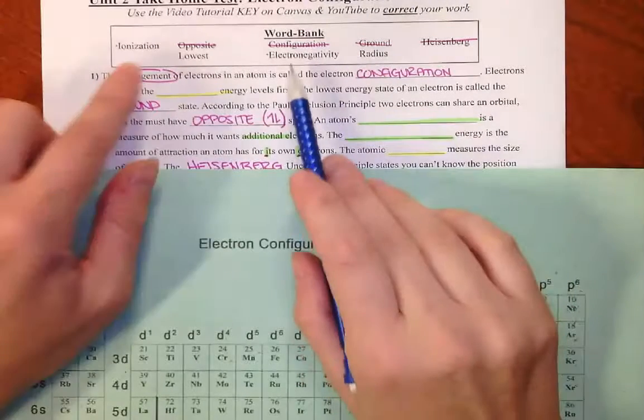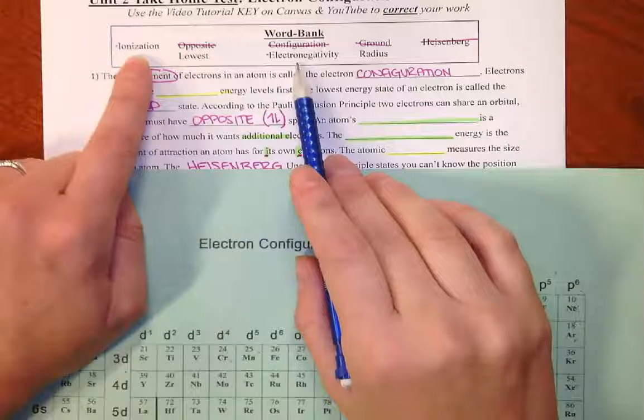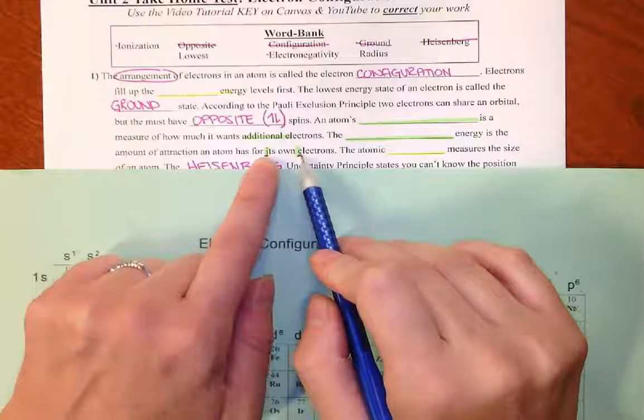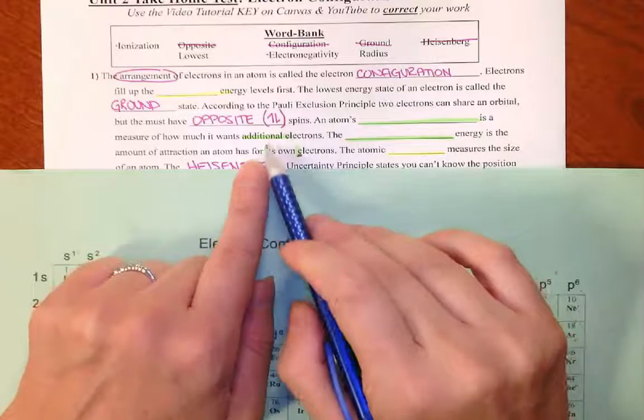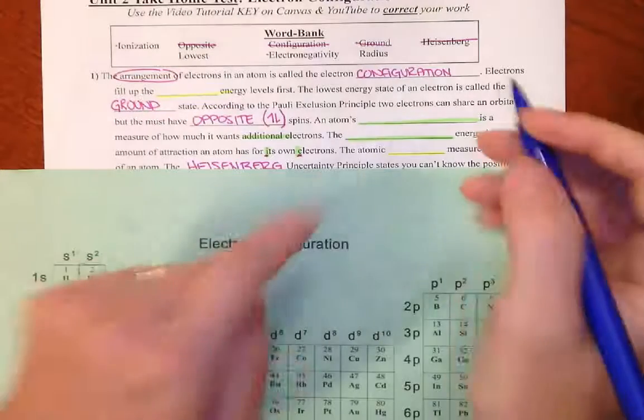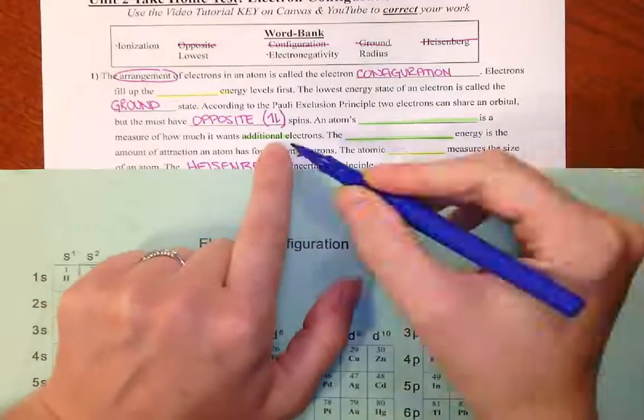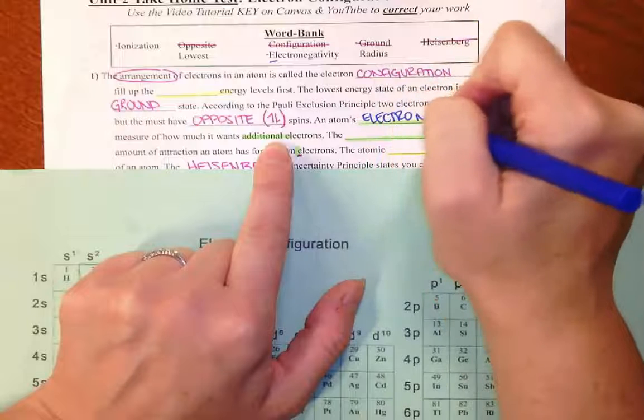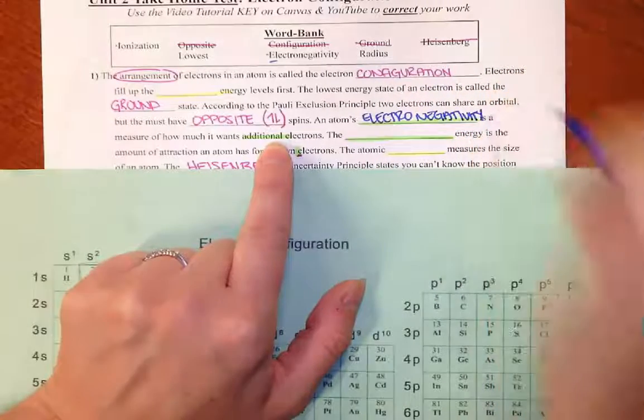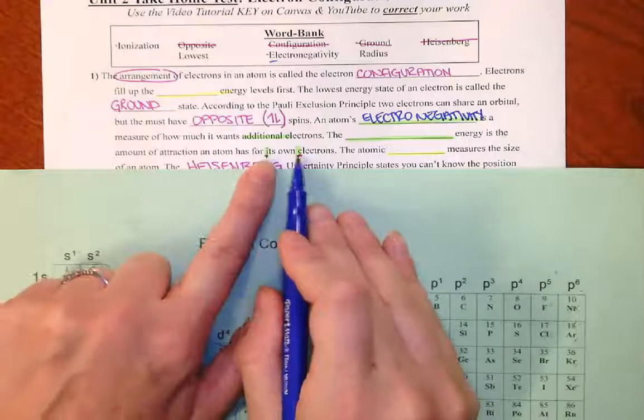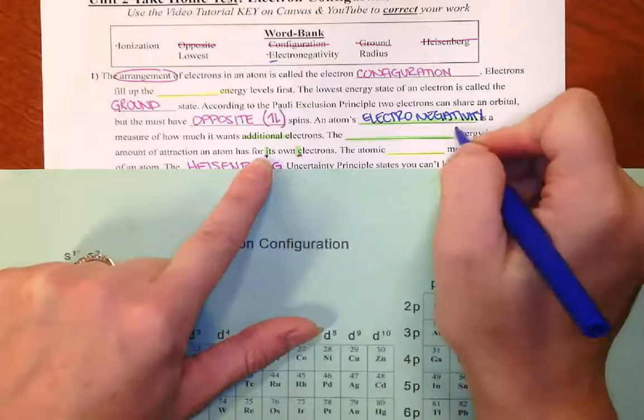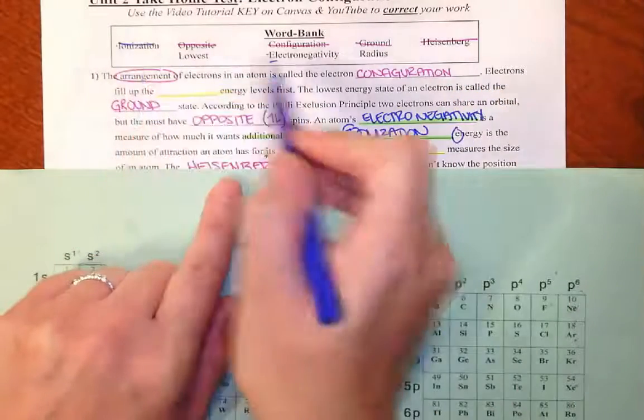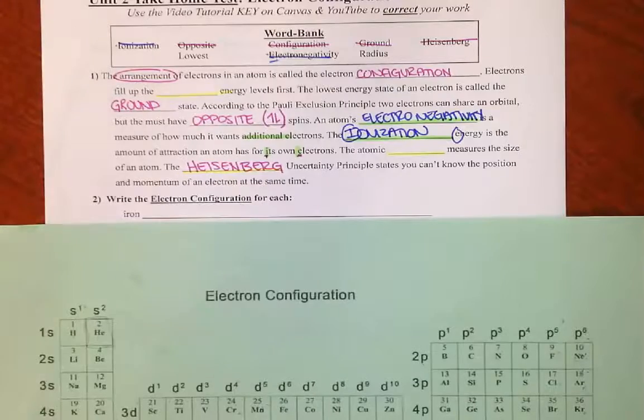Both ionization and electronegativity are about attraction to electrons. The difference is an atom's attraction to its own electrons, how much it wants to keep what it already has, is ionization energy. How much an atom wants additional electrons or extra electrons is electronegativity. So an atom's blank is a measure of how much it wants someone else's electrons. Extra electrons would be electronegativity. The amount of attraction it has for its electrons, the ones it already has, is ionization energy.